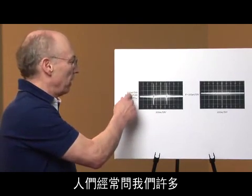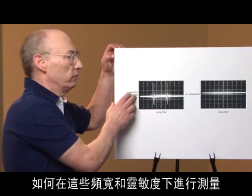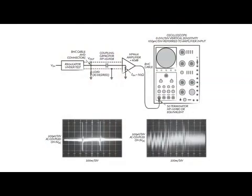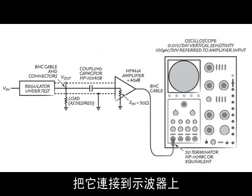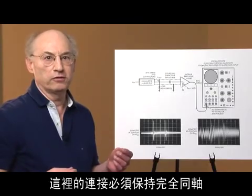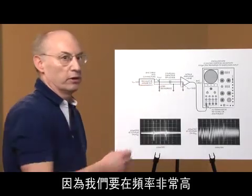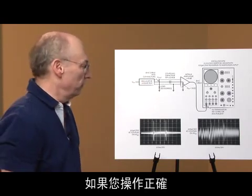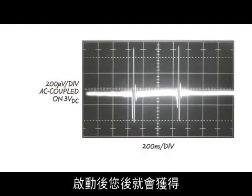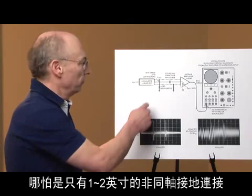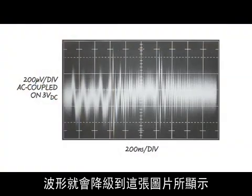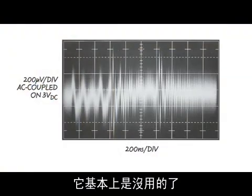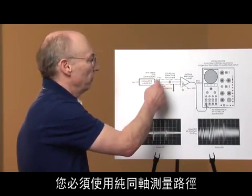We get a lot of questions from people about how we measure at these sensitivities and bandwidths. Basically, we take a 50-ohm noise-limited amplifier and pipe it right to the oscilloscope. We connect the input of the amplifier via a coupling capacitor to the regulator under test. It's essential that this connection chain be made purely coaxially because we're at high frequency and very high sensitivity. If you do everything right and button it up, you get the waveform we had in the last picture. If there's as little as one or two inches of non-coaxial ground connection in this chain, the waveform degrades to this presentation, which is basically useless. You have to have a purely coaxial measurement path.